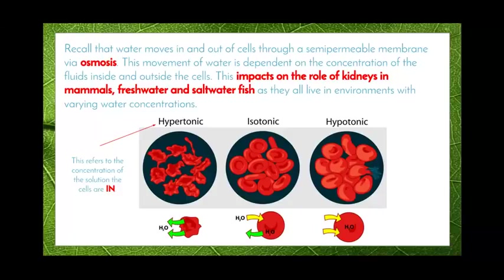In the third image, we have a hypotonic solution, which means there is much less water inside the cells than outside. So water is constantly moving into the cells. Because we're talking about animal cells, there's no cell wall to protect the cell membrane from bursting. When the maximum level is reached, it's just like a balloon — the water keeps filling the cells and eventually they burst, leaving them unable to function.